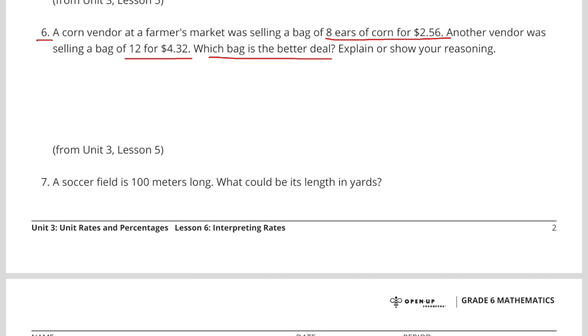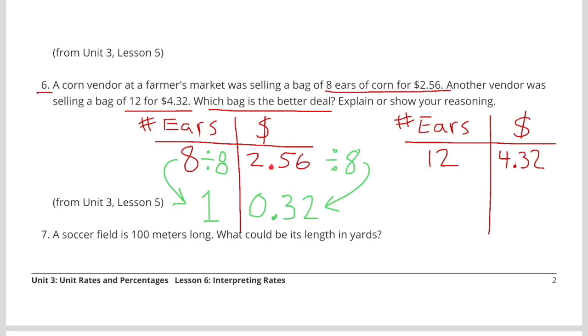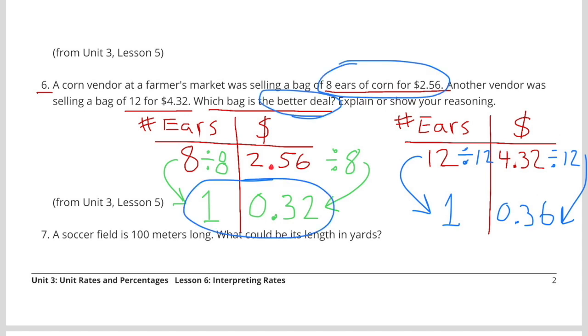Number 6. A corn vendor at a farmer's market was selling a bag of 8 ears of corn for $2.56. Another vendor was selling a bag of 12 for $4.32. Which bag is the better deal? Explain or show your reasoning. The table shows the first vendor sells the ear of corn for $0.32. 8 divided by 8 equals 1, and $2.56 divided by 8 equals 32 cents. So one ear of corn for $0.32. The second vendor sells an ear of corn for $0.36. 12 divided by 12 equals 1, and $4.32 divided by 12 equals $0.36. The better deal is the first vendor. One ear of corn for $0.32.